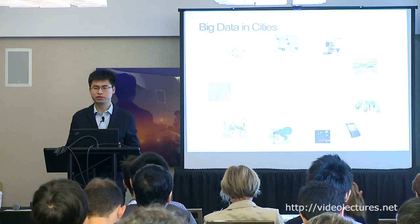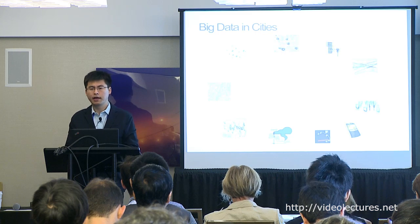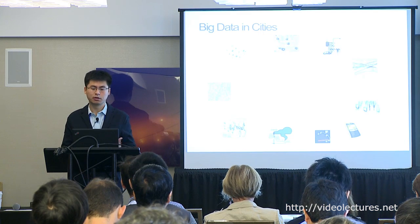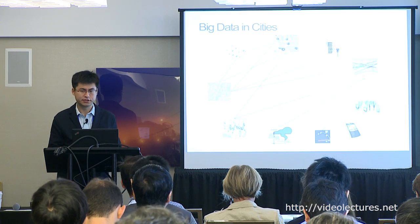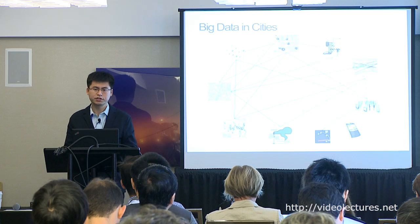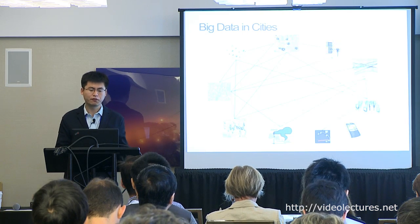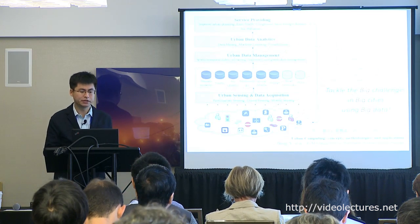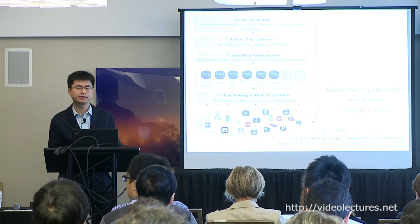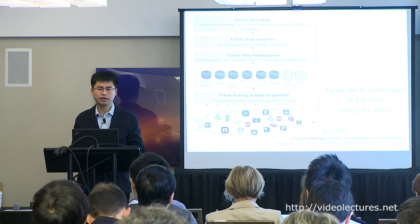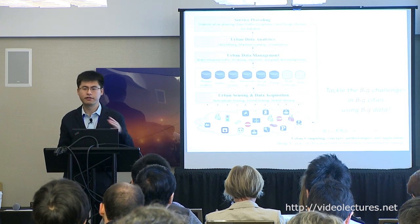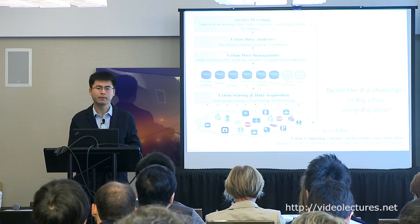Motivated by this opportunity, we came up with a vision for urban computing since 2008, which is comprised of four major layers: urban sensing, urban data management, urban data analytics, and service-providing.